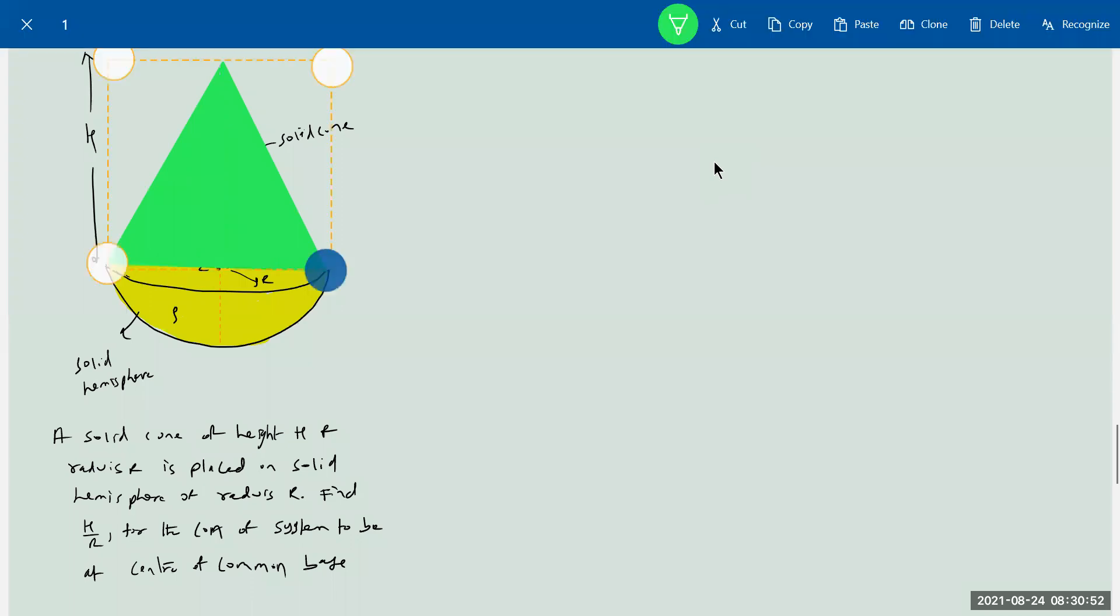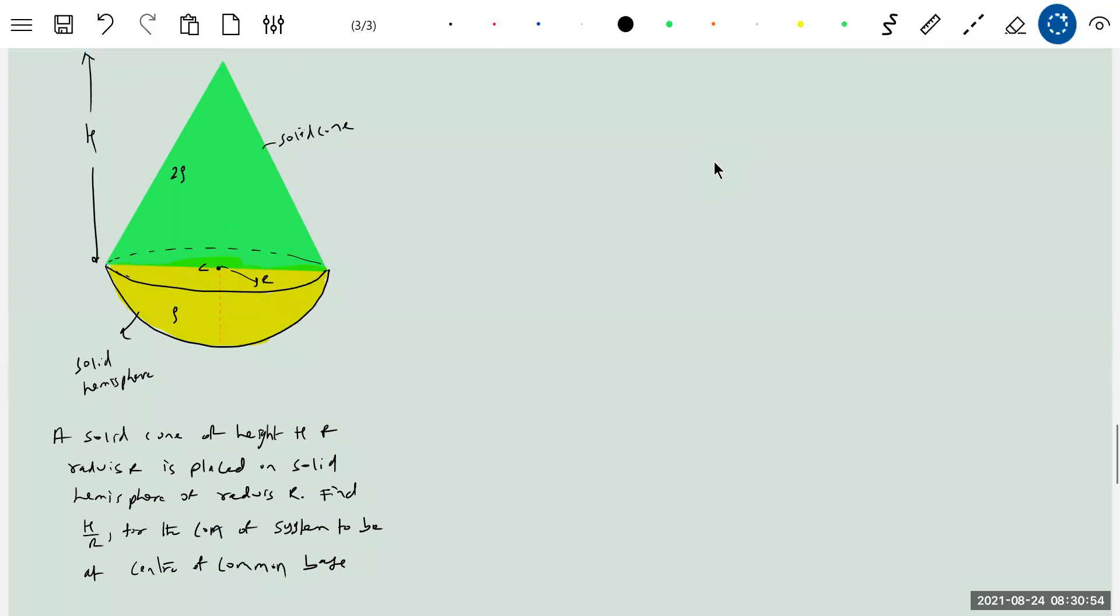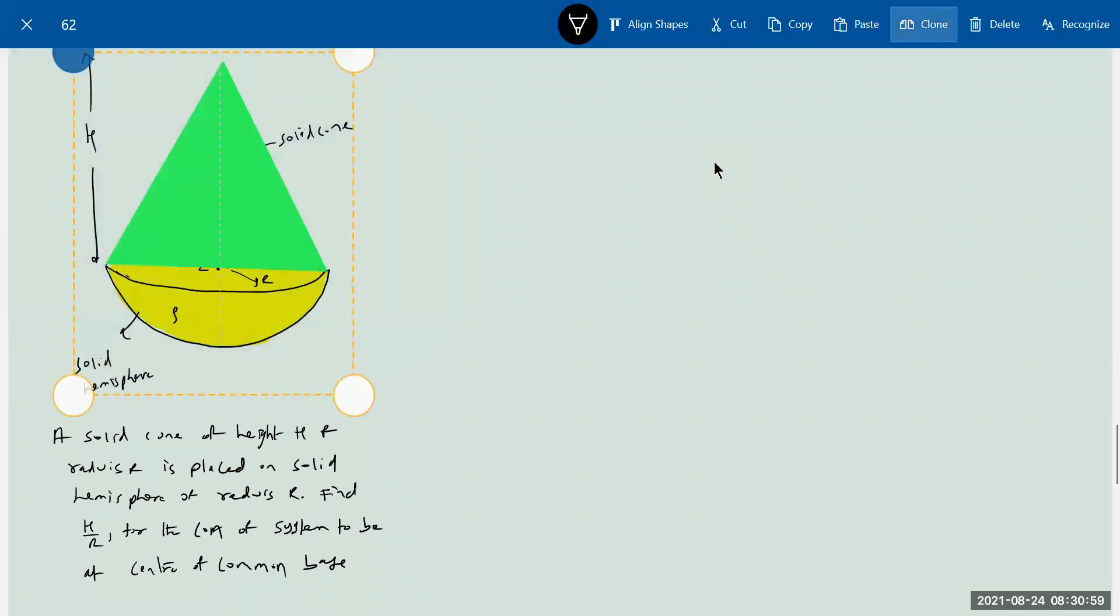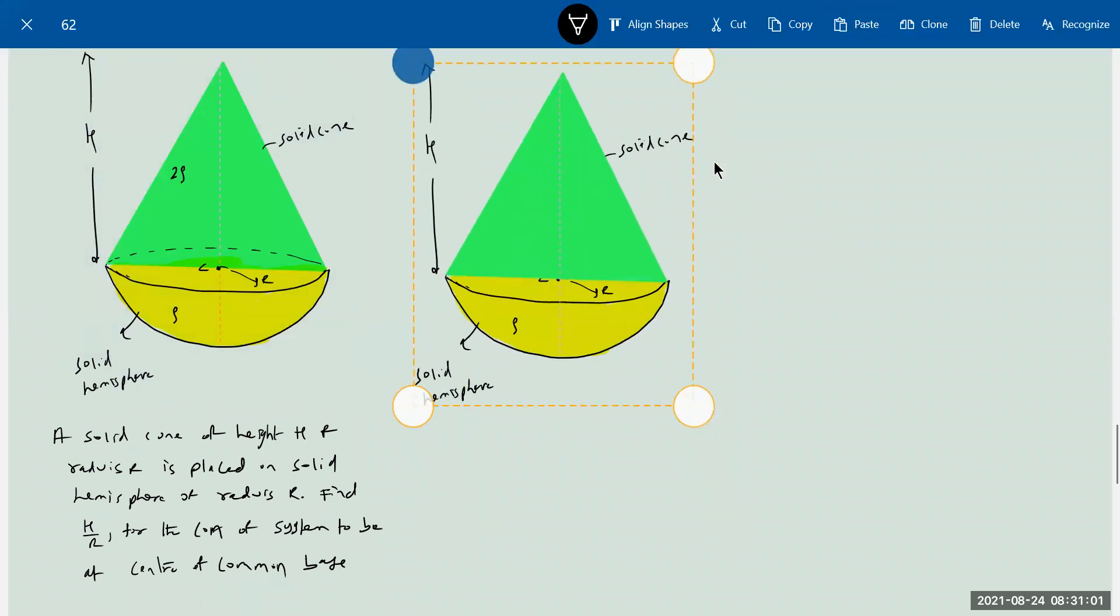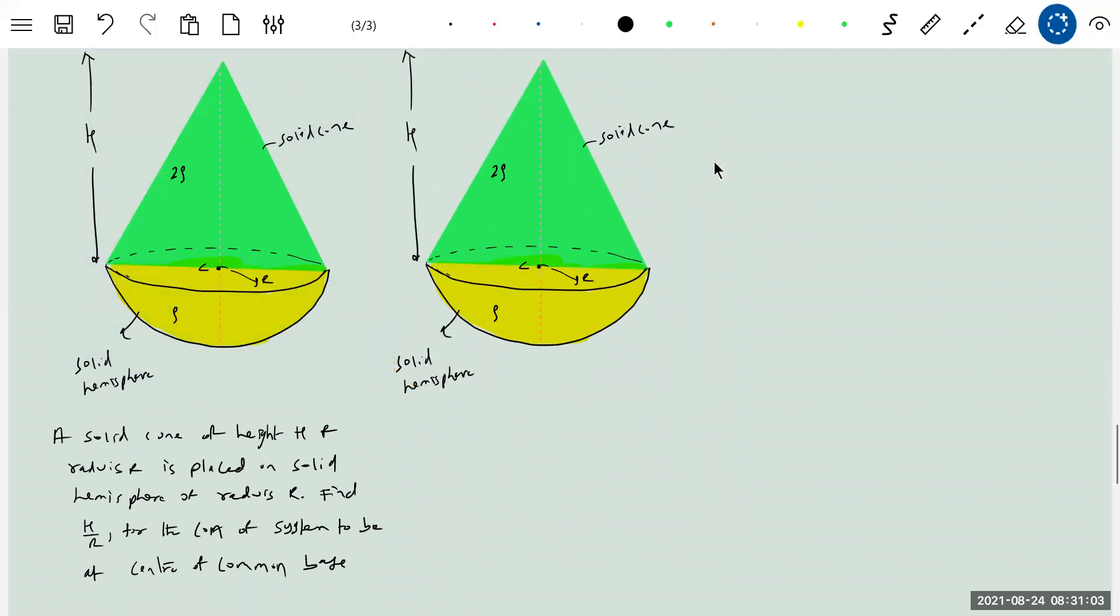Like that, more than one object will come in contact and they will put a condition that the center of mass of system must be here or must be here.